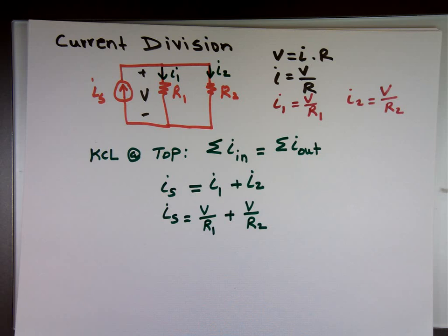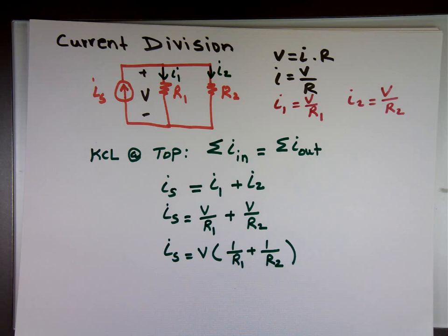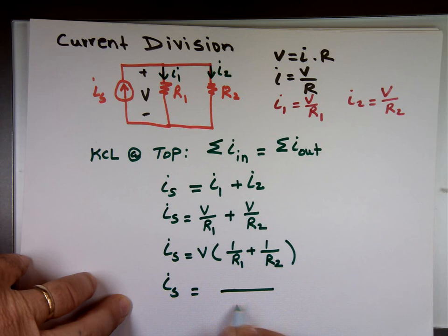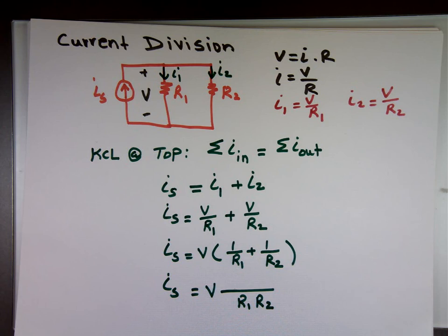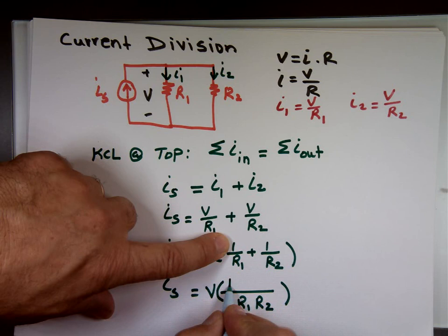I sub S, that's going to be V times 1 over R1 plus 1 over R sub 2. Now, if you want to add fractions, what do you need? Common denominator, which is what? R1, R2, right? So R1, R sub 2, that means to make this one look like this, you got to multiply the top by what? R sub 2. To make this one look like this, you got to multiply the top by R sub 1.